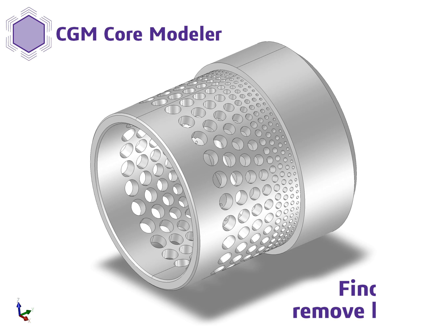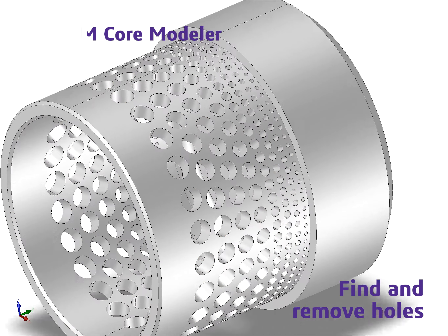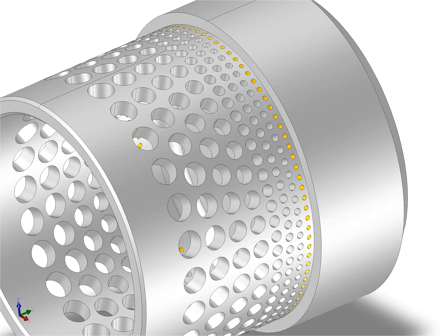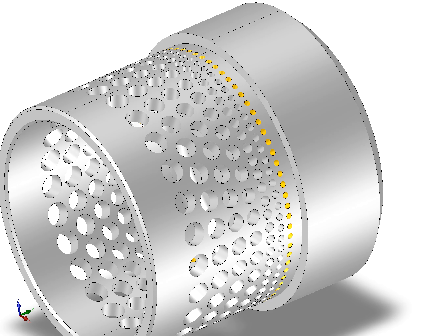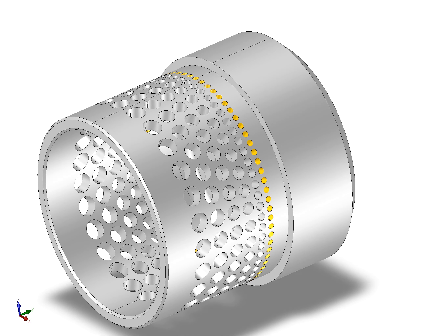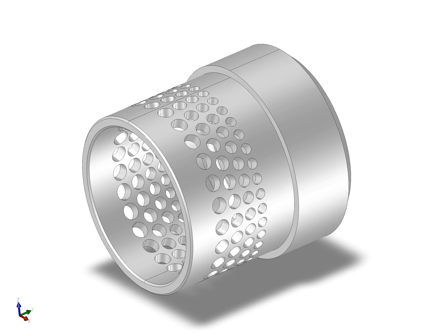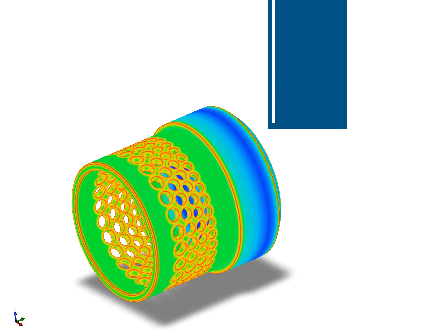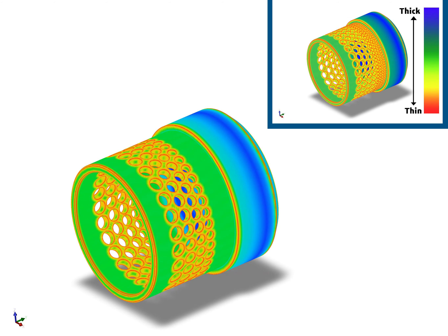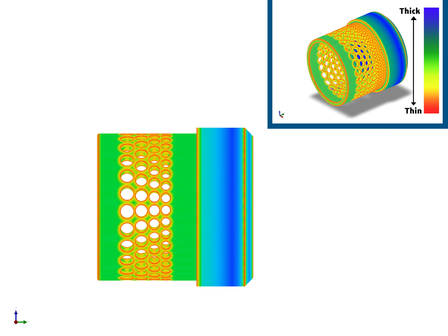Spatial's CGM Core Modeler provides a complete set of APIs to support design for manufacturability. With feature recognition, you can identify features such as holes and extract parametric data to identify and remove the smallest holes by diameter. Now we have removed four rows of densely packed holes which could have caused manufacturing defects.